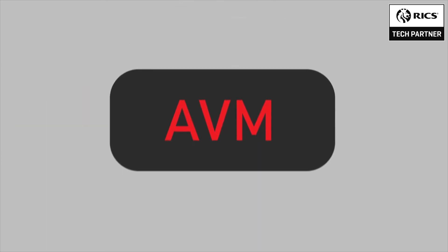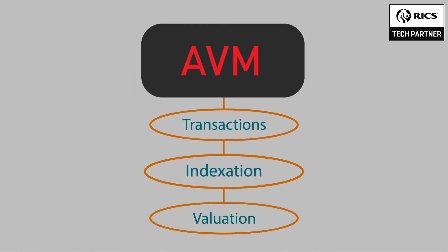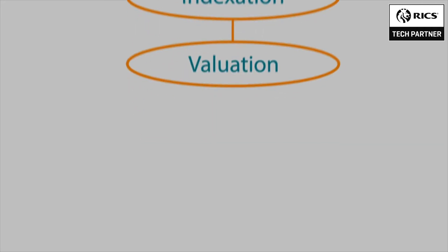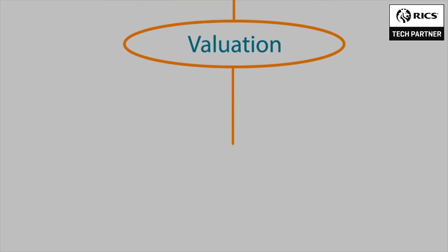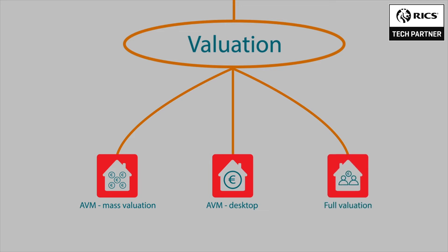The Automated Valuation Model developed by Data Investment uses transactional data from the registry of contracts and in-house valuation data to create a large database on which the model is based. Indexation is a control model which we use to verify the results of our AVM. Data Investment's Automated Valuation Software Model is able to provide three types of valuation: Mass Valuation, Desktop Valuation, and Full Scale Valuation.